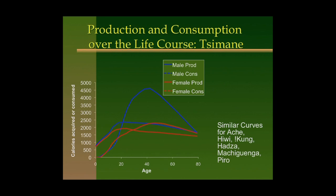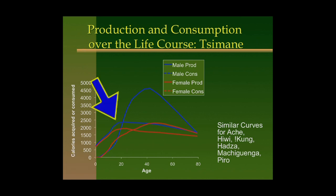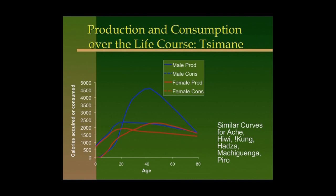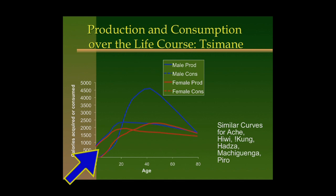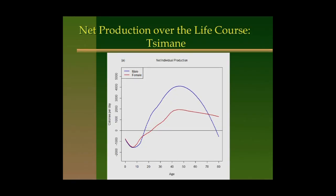This graph shows age-specific caloric production and consumption. By age 18, consumption is in the 2,000 calorie range. These are males and females and their production lines. This is for the Tsimane, but we've seen very similar curves for the Aceh, Hiwi, !Kung, Hansa, Machiganga, and Piro. There is a big caloric deficit in early ages and a caloric surplus in older ages. Netting them out, you're a net consumer while growing, you cross over at around age 20, and then you're a net producer for the rest of your life.